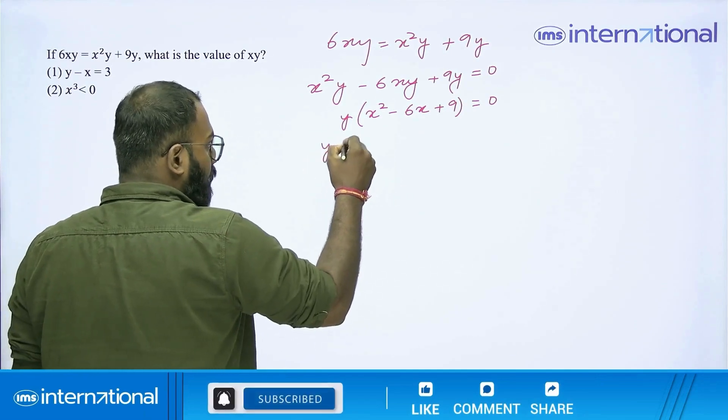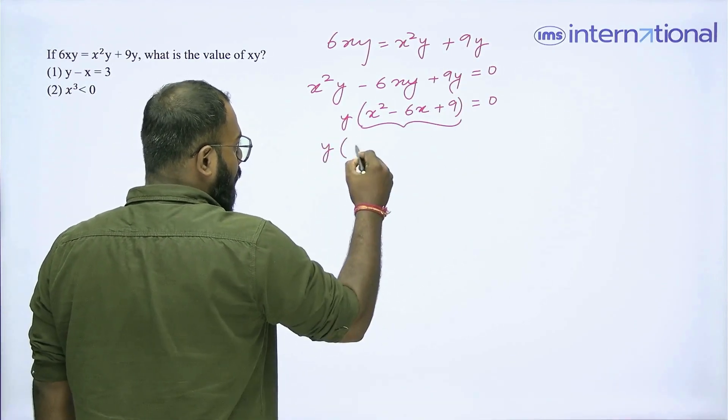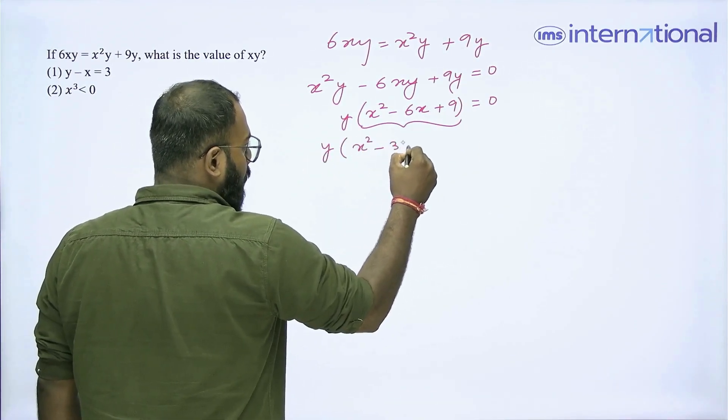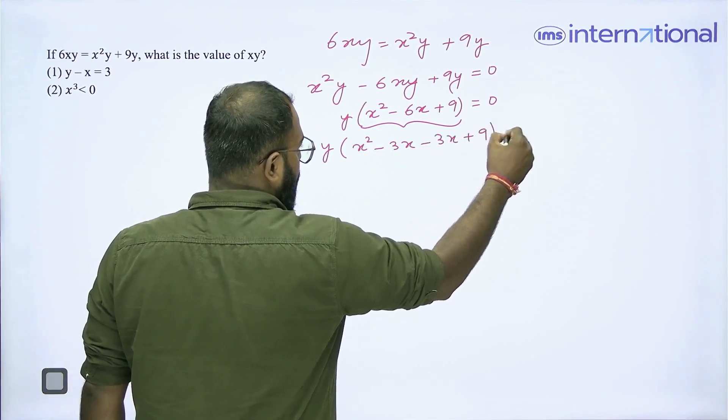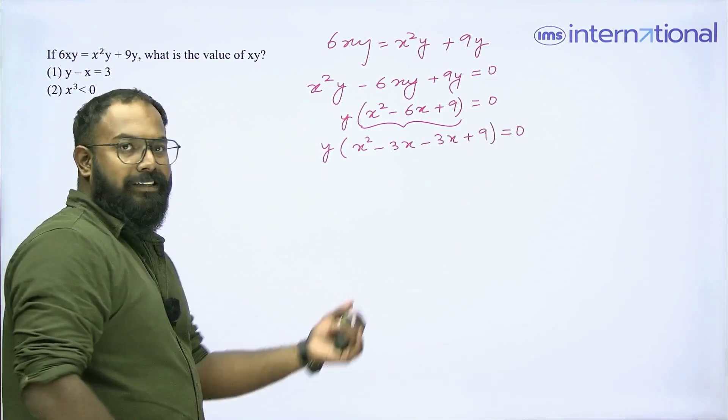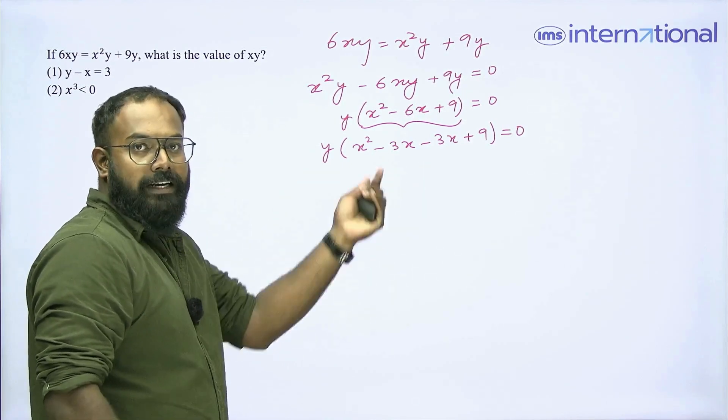I can further factorize this unit and write as x² - 3x - 3x + 9 = 0. So, I am splitting the middle term to factorize it further.